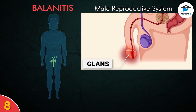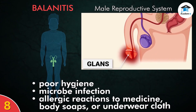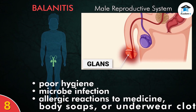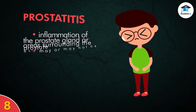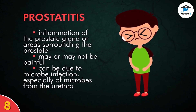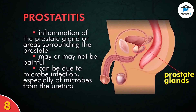Balanitis is the swelling or inflammation of the glans penis — the head of the penis — which can be itchy or painful. Poor hygiene, microbe infection, and allergic reactions to medicine, underwear cloth, or soap can cause balanitis. Prostatitis is the inflammation of the prostate or areas surrounding the prostate, which may or may not be painful. One cause is microbe infection, especially of microbes from the urethra.